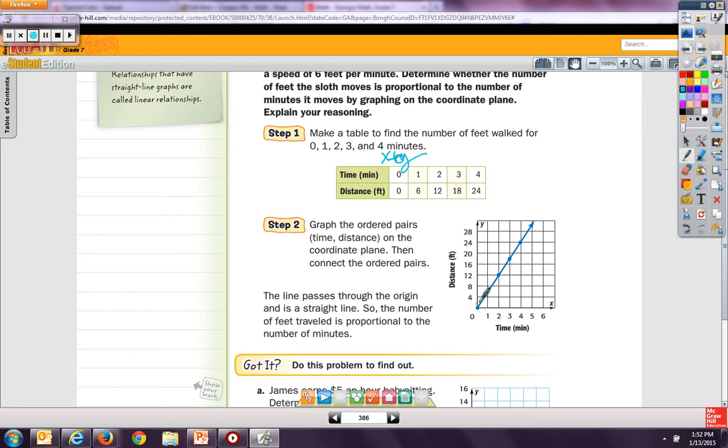So this is a straight line, and it goes up by 6 each time. And this forms a straight line. So this situation is a proportional relationship. So the line passes through the origin and is straight. If it curves at any point, it is not proportional.